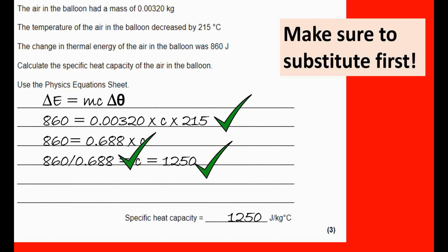If you're unsure about substitution, draw a little line matching each quantity to its symbol — mass to mass, change in temperature to delta theta, energy to energy. That helps you put numbers in the right spots. Be very aware of prefixes and units. In this question we don't need to change prefixes, but there will be questions on your paper where you have to — be ready for them.